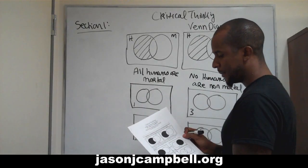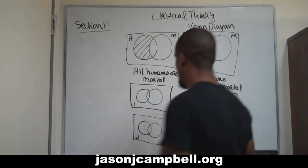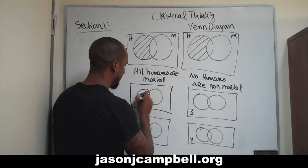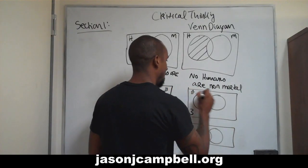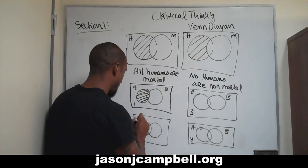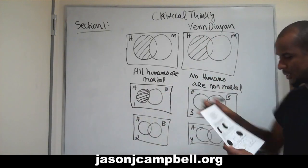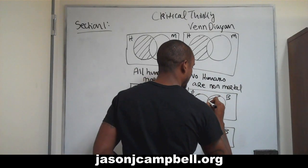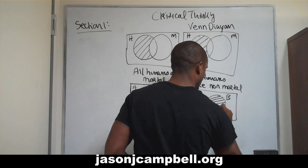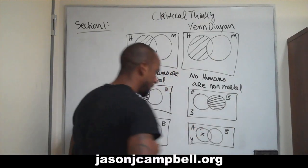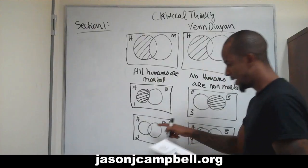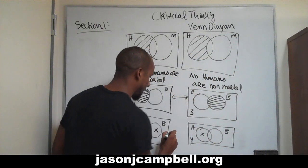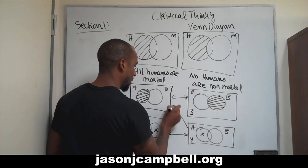In diagram one, we want to completely shade in circle A, so that the entirety of circle A is shaded in, including the overlap with B. In diagram two, the complete circle of B is shaded in, including the overlap with A. In diagram three, there's an X — something occupies the space in A. And in diagram four, there's an X in B — something occupies the space in B. And then we have arrows connecting these, and diagonal arrows connecting the others.